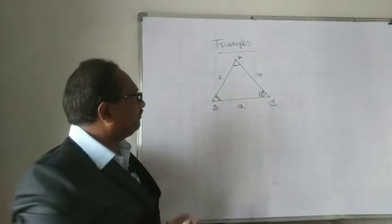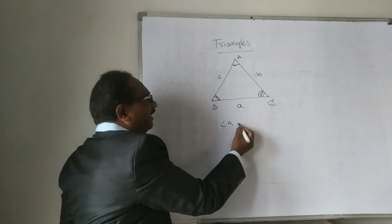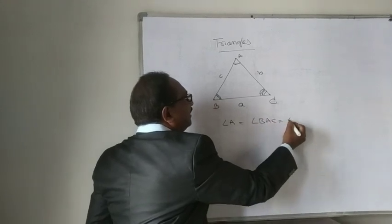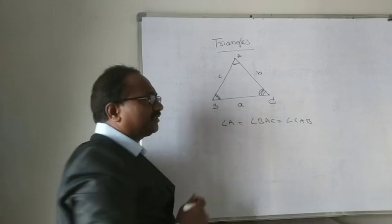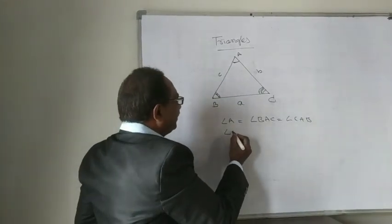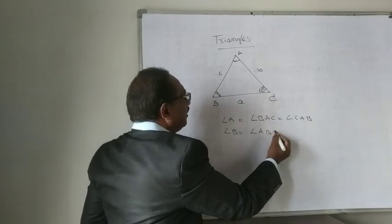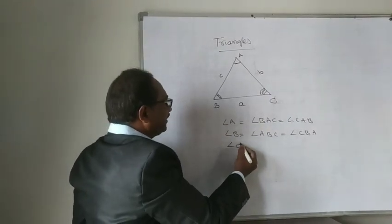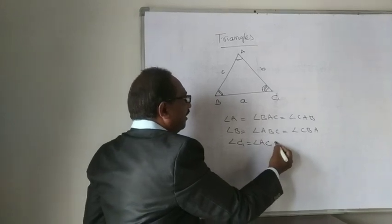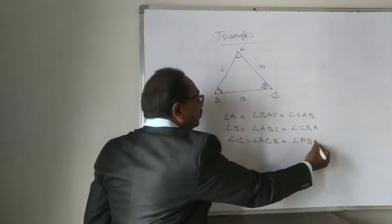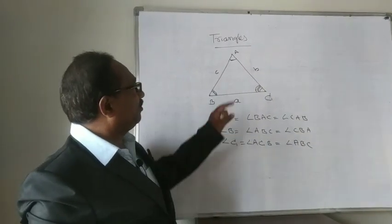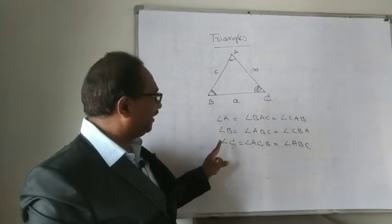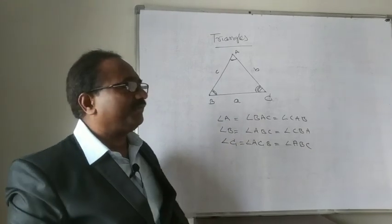If you take one angle A, we can represent it in three ways: angle A, or angle BAC, or angle CAB — all three are equal to angle A. Similarly, angle B can be represented as angle B, angle ABC, or angle ABC. Angle C means angle ACB or angle ABC — both represent angle C. So every angle can be written in multiple ways: angle A or angle BAC or angle CAB, and similarly for angle B and angle C.